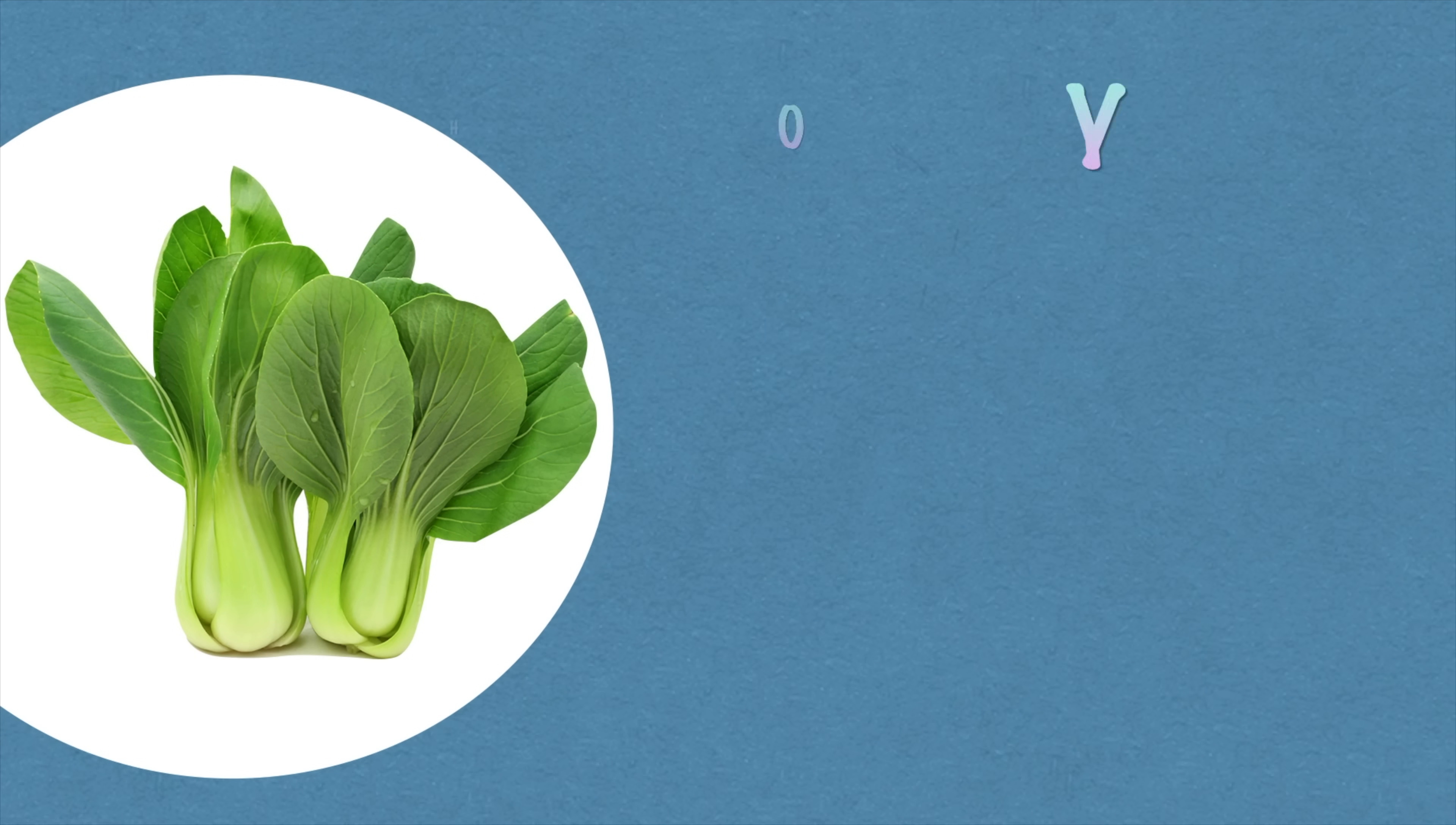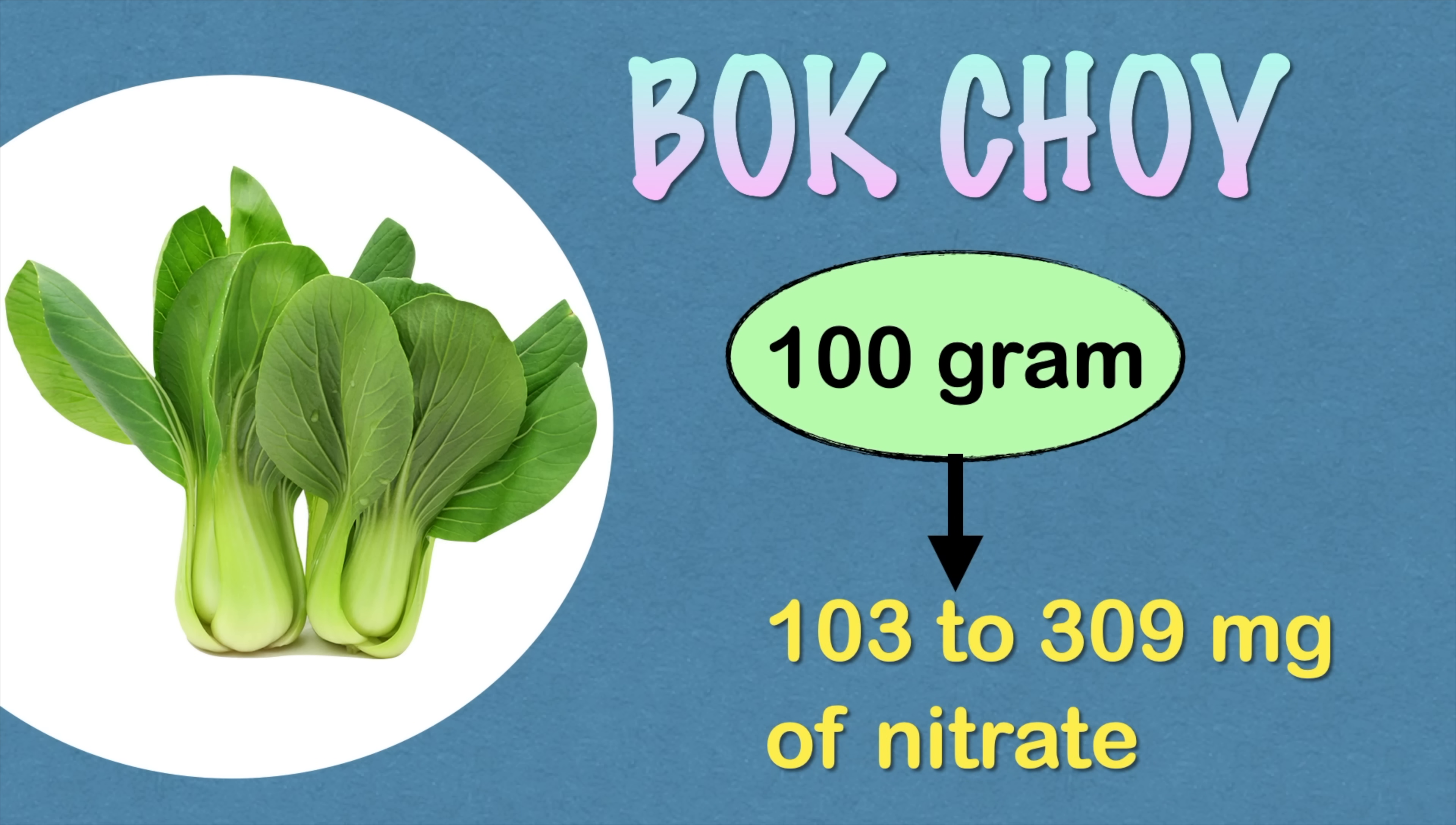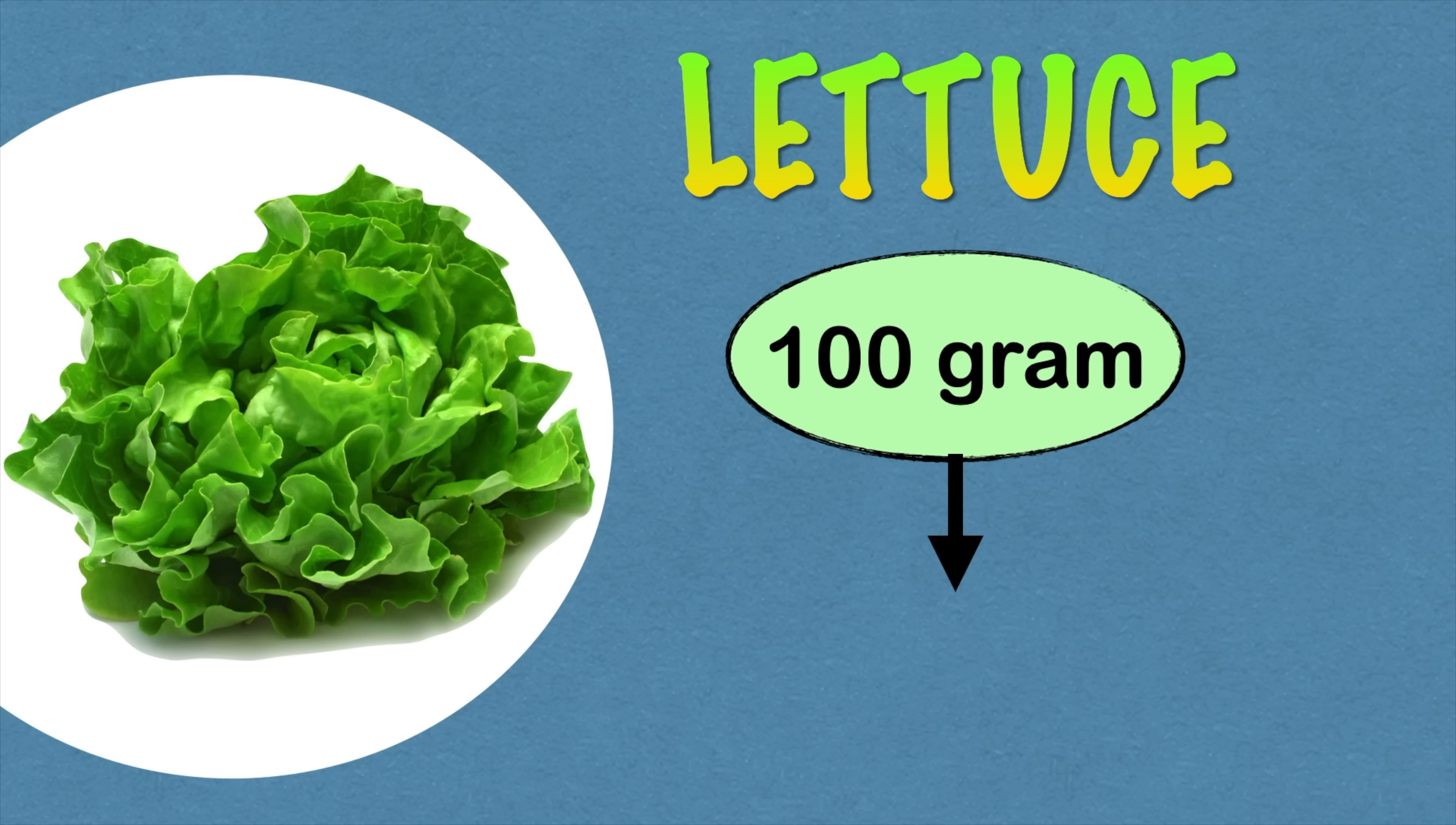Out of the cabbage family, bok choy is the highest in nitrates. Depending on its growing condition, bok choy can contain anywhere from 103 to 309 mg of nitrates per 100 grams. Next is lettuce. While lettuce isn't always known for being rich in nutrients, it contains a significant amount of natural nitrates. It has 13 to 267 mg of nitrates per 100 gram servings.